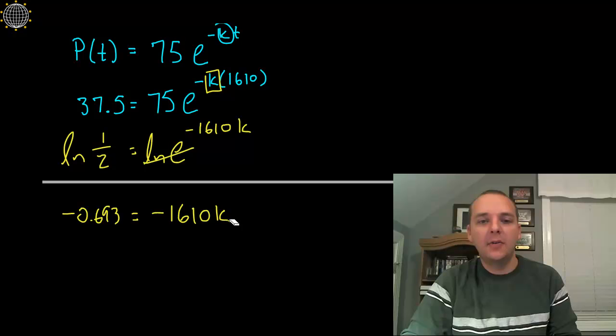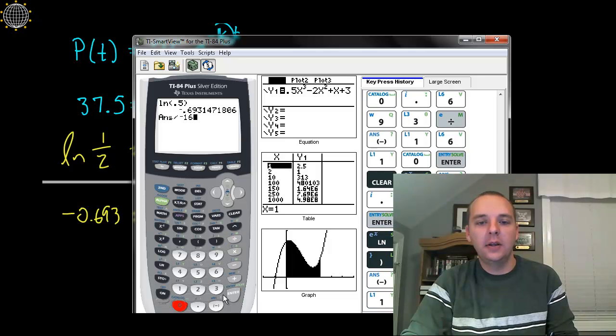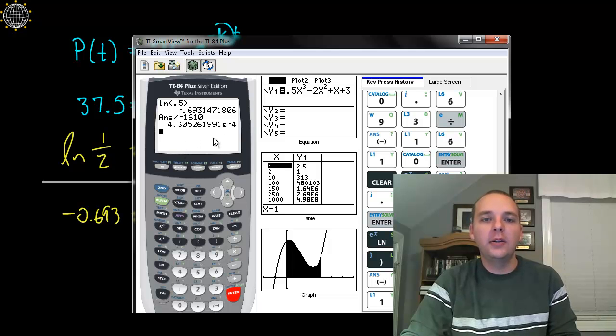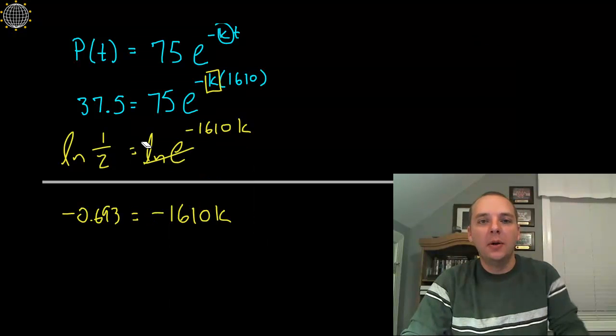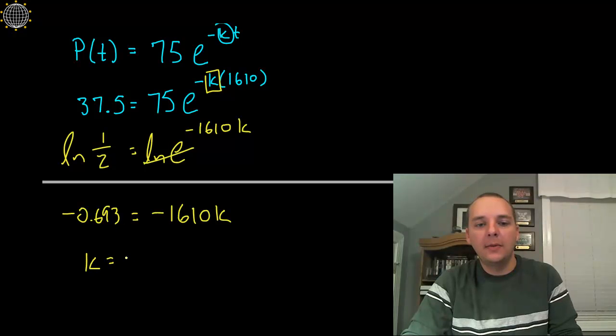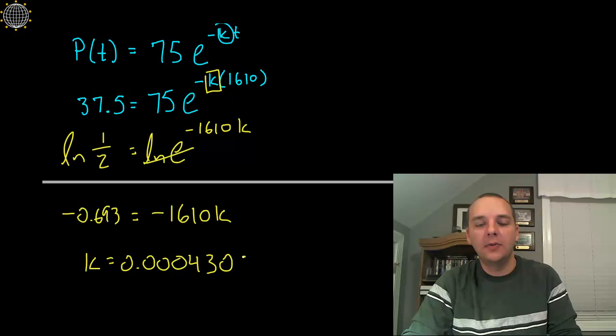The last step is to solve for K here, so we'll divide both sides by negative 1610. So we'll take this quantity, divide it by negative 1610, and this will give us our K value. Notice that this is written in scientific notation, which means we have to move this decimal place left 4 places because it's times 10 to the negative 4. We'd have K equals 0.000430526.